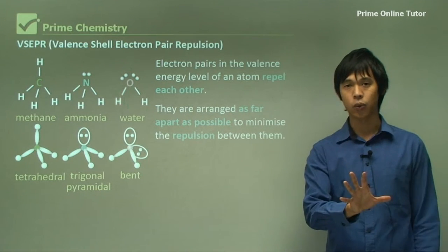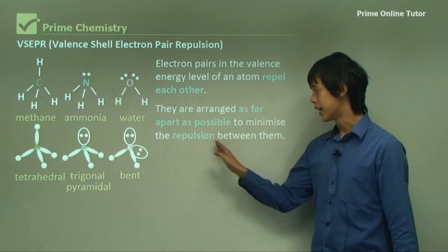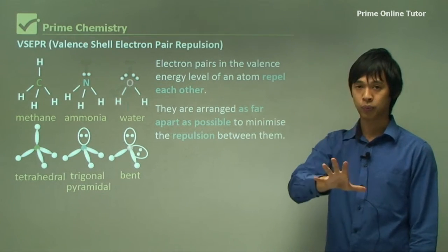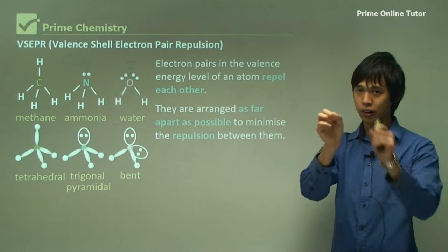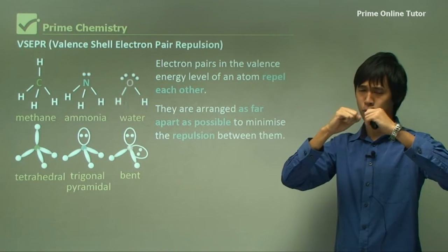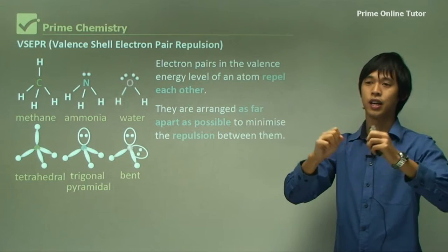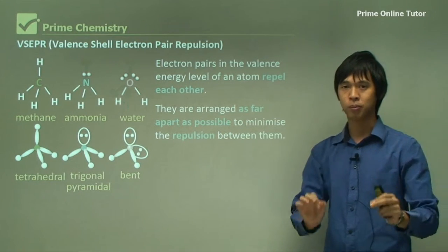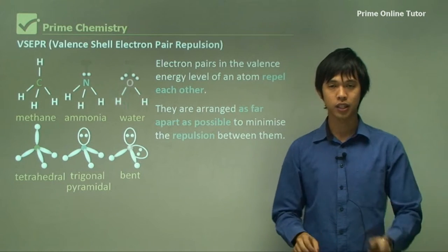Now, the reason they're organized that way is because you want to minimize the repulsion between each electron. So that's why you don't have two electrons really close together, because the repulsive force would be really big. So they just keep pushing each other away until they reach the minimum level of repulsion.